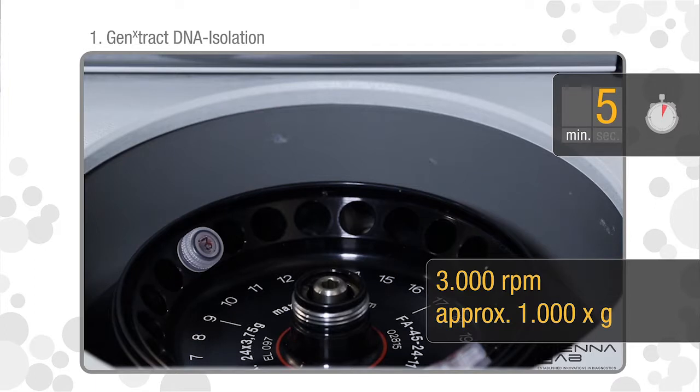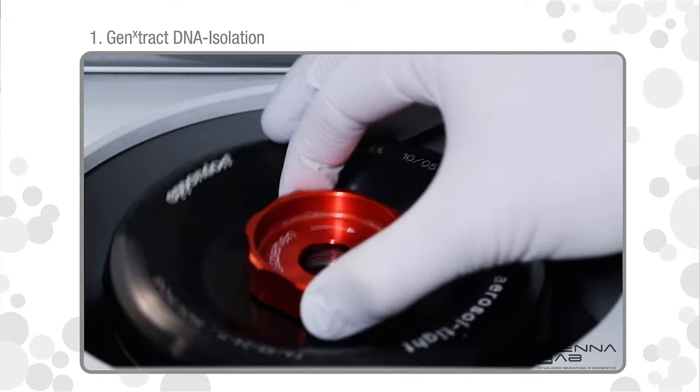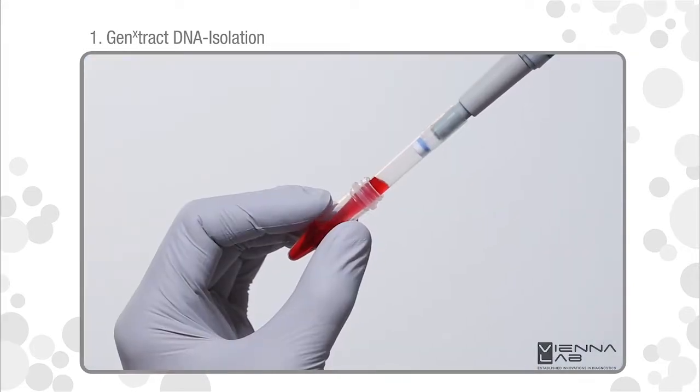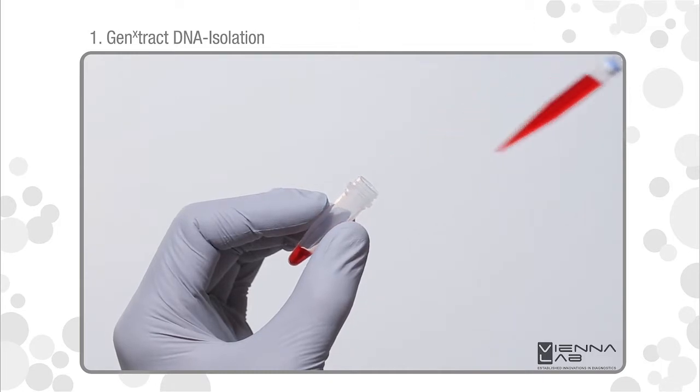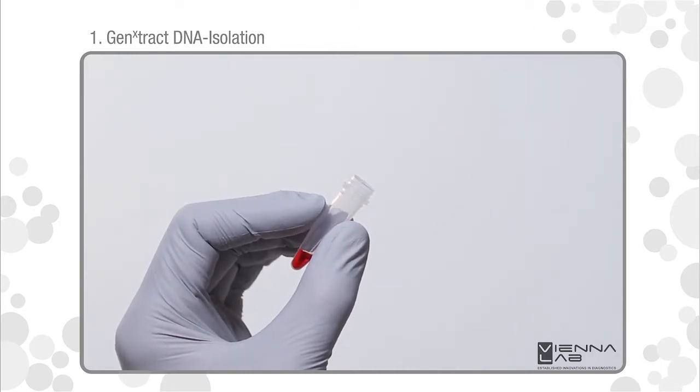Centrifuge for 5 minutes at 3000 RPM in a micro-centrifuge. Remove and discard the upper 1 milliliter of supernatant. Leave the pellet undisturbed.